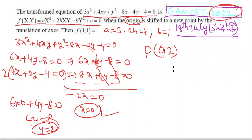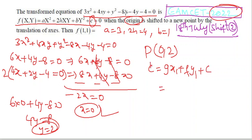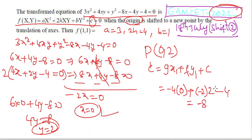Now finding c. The formula is C = gx₁ + fy₁ + c. Here g = −8/2 = −4, f = −4/2 = −2, x₁ = 0, y₁ = 2, and constant c = −4. So C = (−4)(0) + (−2)(2) + (−4) = −8.